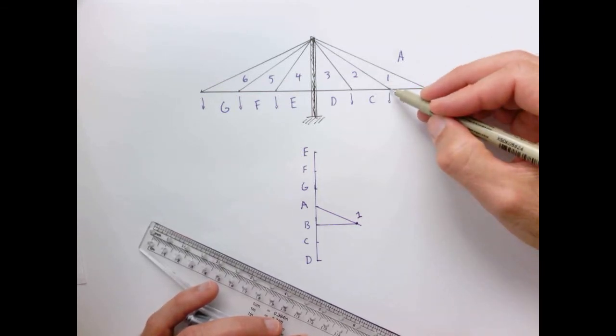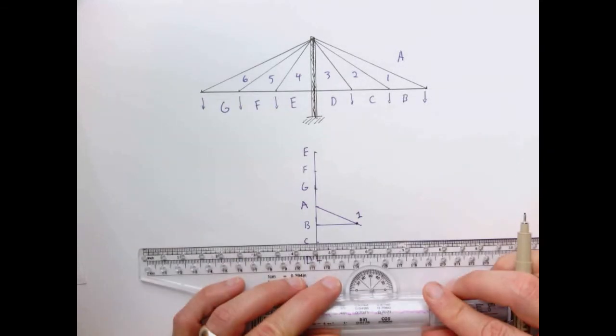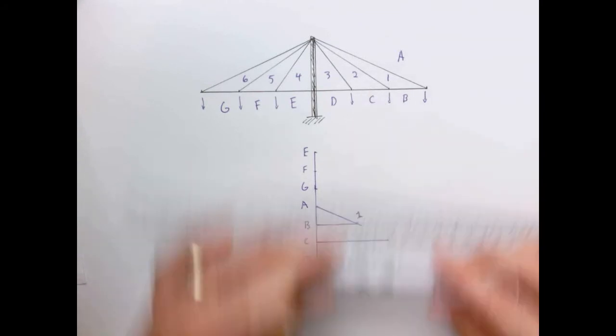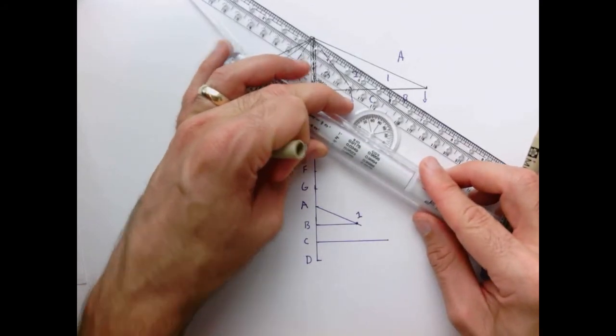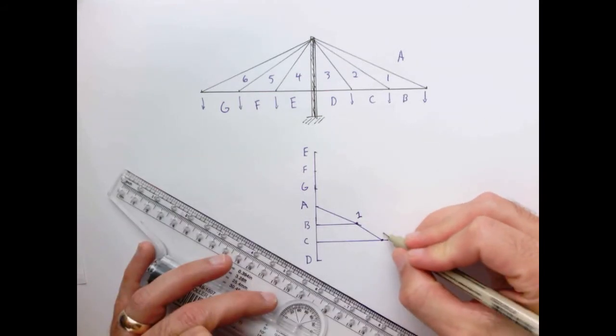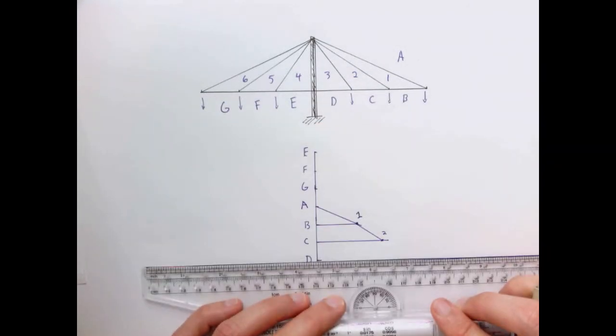Now we come to this node here and draw our little force triangle. So C is going to connect to point two through a horizontal line. One and two are going to connect at this angle here.